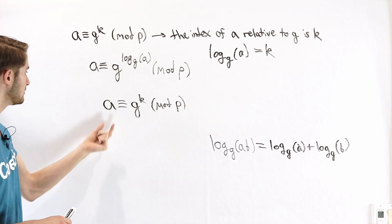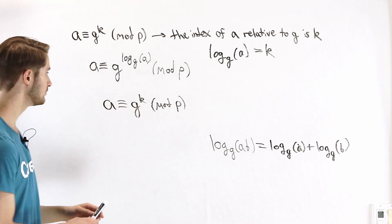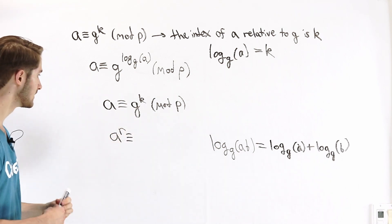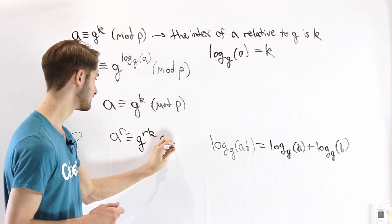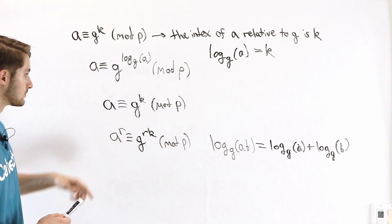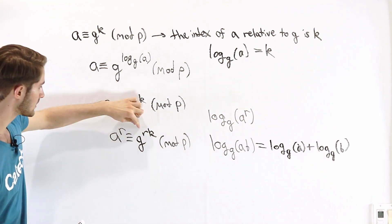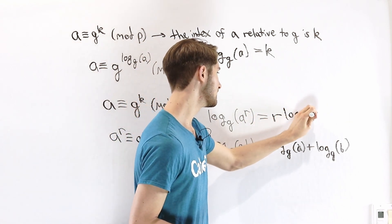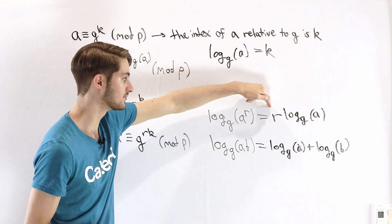Now let's look at another property relating to what happens when we take numbers to a particular power. Say that the index of a relative to g is k. What would happen if we take both sides of this congruence and raise it to the power of some number r? We have a to the power of r congruent to g to the k, raised to the power of r, which gives g to the r times k, since we can multiply those exponents. Rewriting in log notation: the index of a to the power of r equals r times k, which is r times the index of a. This is what we'd expect from logarithms — we can take the exponent inside the log and bring it out to the front as a constant we multiply.